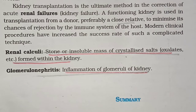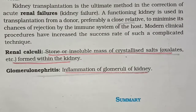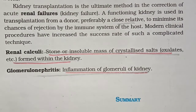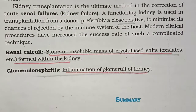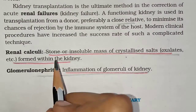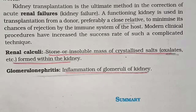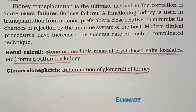Since the kidney is not properly functioning, dialysis is done. Kidney failure means kidney transplantation may be needed. After that, the next disorder is renal calculi — this means that a stone is formed in the kidney. It is an insoluble mass of crystallized salt. The stone, for example oxalate, is created in the kidney. That is why it is called a kidney stone.